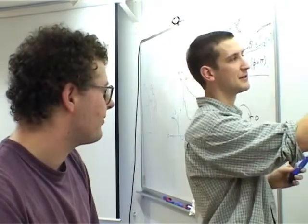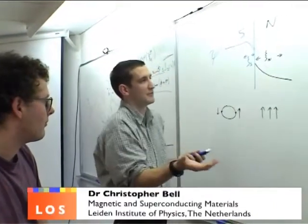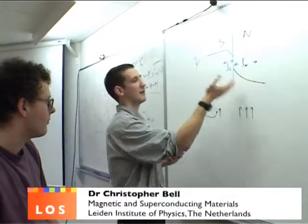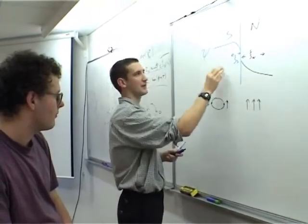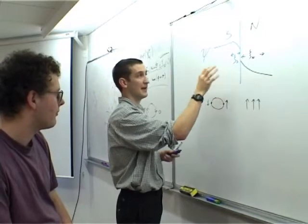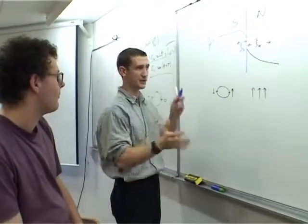Within the distance, the size of a Cooper pair to the normal metal, the superconductor is feeling the normal metal, and the normal metal destroys the superconductivity. The superconductivity can't exist in the normal metal over very large length scales, so we are suppressing the superconductivity as well as inducing some superconductivity in the normal metal at the same time. We get a bit of both.